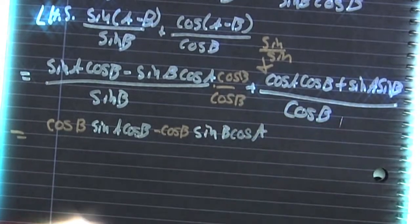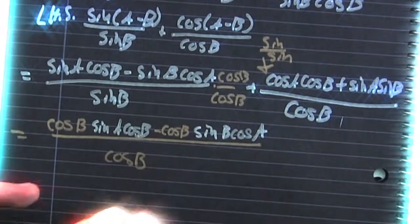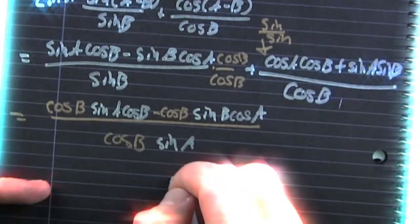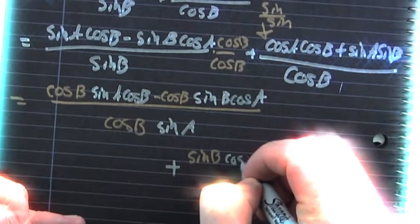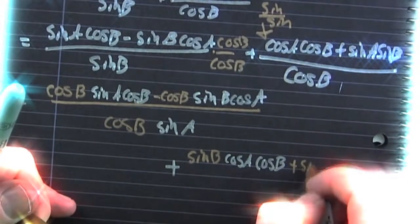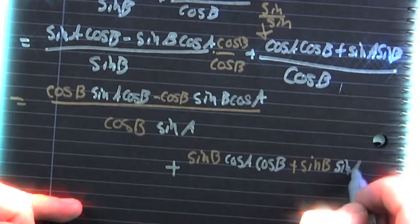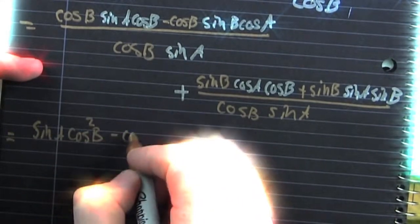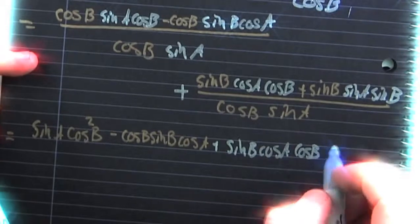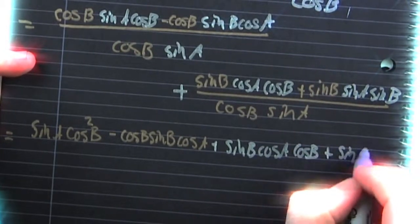And then we're going to divide it by the common denominator. Now we're taking a look at that second term. We're multiplying top and bottom by the sine over sine. So when we distribute that sine to the top, it's going to go to both of those terms. That's the sine B times cosine A cosine B plus the sine B sine A sine B, divided by that common denominator. And now that we've achieved a common denominator, we're going to add their numerators. We can also clean them up because cosine B times cosine B is going to be cosine B squared. And sine B times sine B is going to be the sine of B squared.